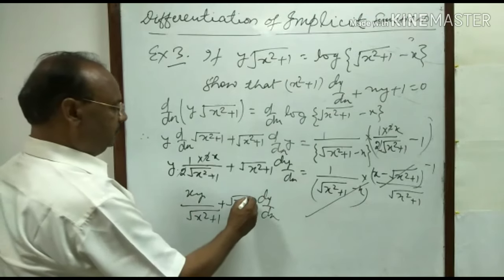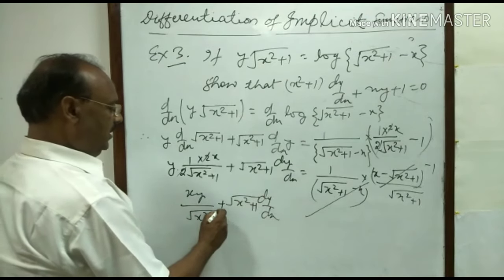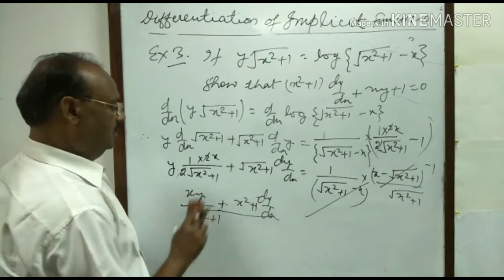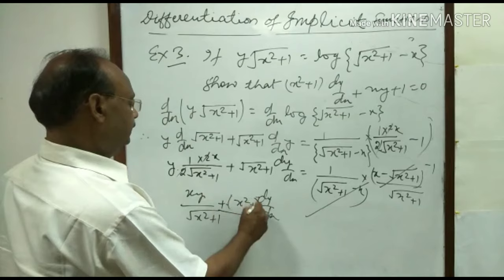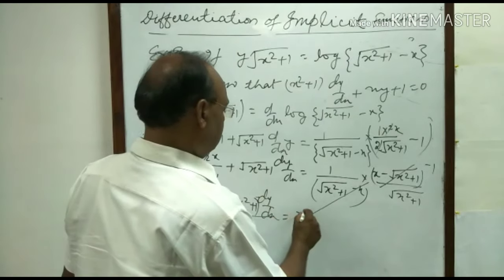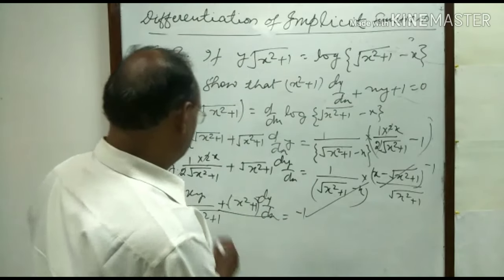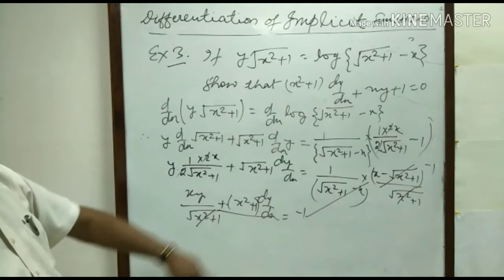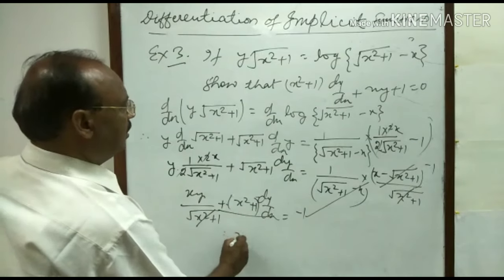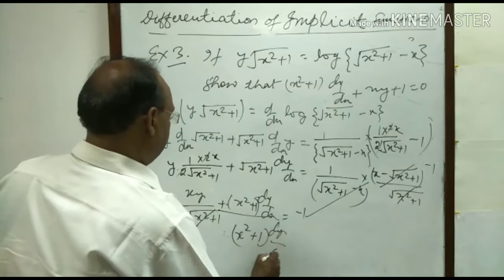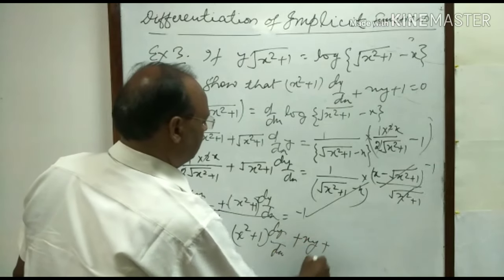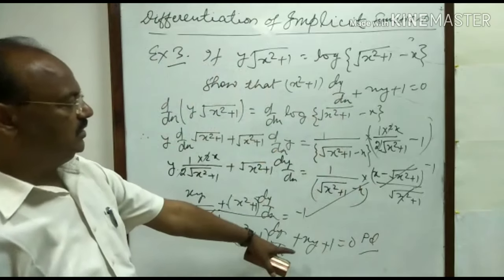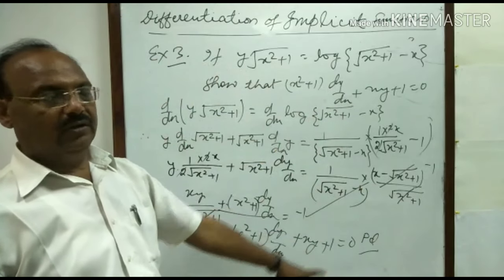Adding the two terms on the left with LCM root(x square plus 1), this becomes (x square plus 1) dy/dx over root(x square plus 1), which simplifies to (x square plus 1) dy/dx. This equals minus 1. Transferring minus 1 to the left hand side gives (x square plus 1) dy/dx plus xy plus 1 is equal to 0. This result has been proved.